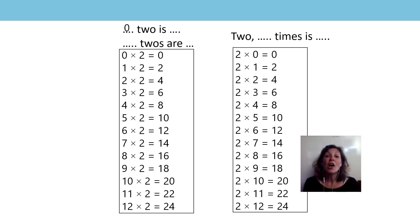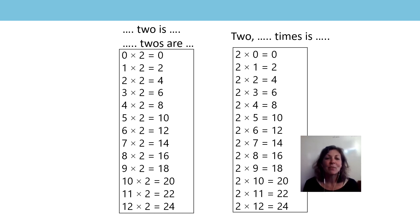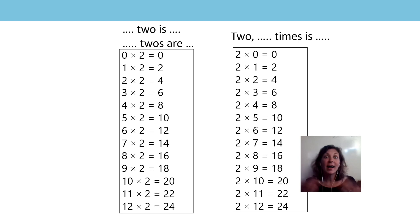0 twos is 0. 1 two is 2. 2 twos are 4. 3 twos are 6. 4 twos are 8. 5 twos are 10. 6 twos are 12. 7 twos are 14. 8 twos are 16. 9 twos are 18. 10 twos are 20. 11 twos are 22. And 12 twos are 24.